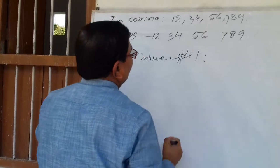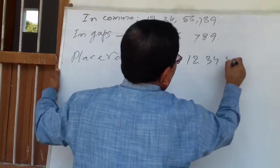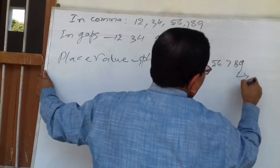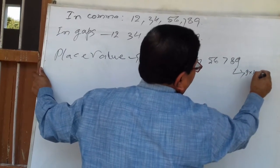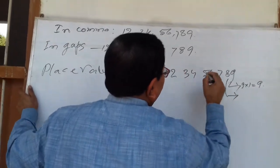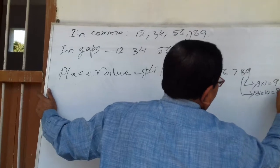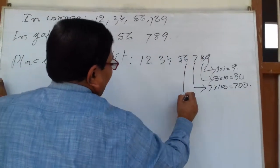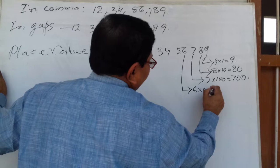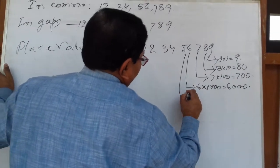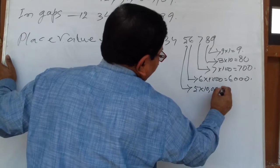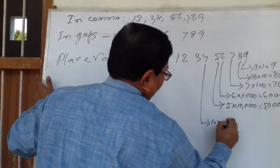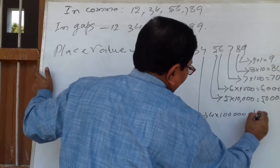Place value: 12,34,56,789. Nine ones is equal to nine. Eight tens is equal to eighty. Seven into one hundred is equal to seven hundred. Six into one thousand is equal to six thousand.